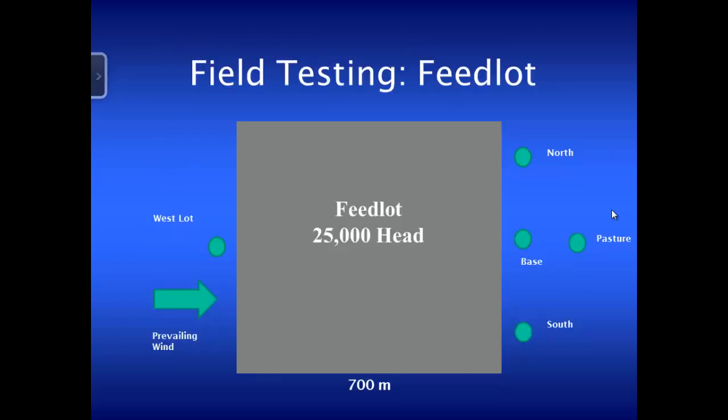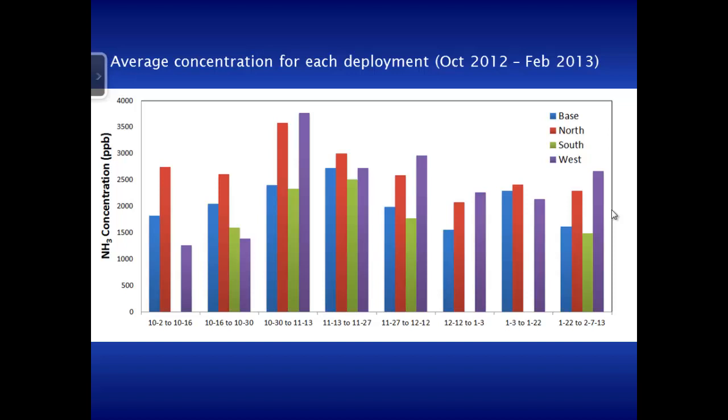We've tested them at both dairies and feedlots, typically setting up one sampler on the upwind side and several on the prevailing downwind side at different distances from the edge of the feedlot. This example data shows some of the highest ammonia concentrations we've ever measured. We see positional variability — the north station is always higher than the others no matter what the date. We're still trying to understand why that particular part of the feedlot has higher emissions.